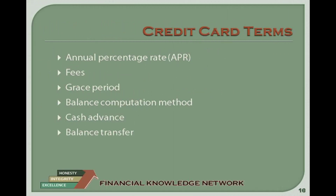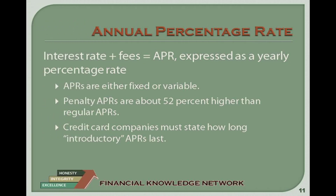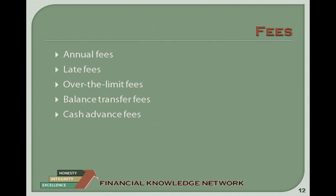Things to consider when contemplating a credit card offer: When assessing the annual percentage rate, include the fees involved as an APR expense so you can get the true cost of credit as part of your review. If the card offers an introductory APR, make sure you understand how long the introductory period will last. The fees you need to be aware of are: annual fees, over-the-limit fees, balance transfer fees, and cash advance fees. It is also important to know what the grace period is — the number of days after the due date you can pay before interest starts to accrue.